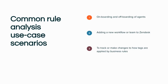So what are some of the common scenarios in which an admin might leverage rule analysis? One of the most common scenarios we see is in the onboarding or offboarding of agents. When a new agent joins the team or leaves the team — especially if that team member works in a specialized function or handles a select ticket type — it becomes extremely important to revise any business rules that affect this agent to ensure as little disruption as possible for your end users in getting their issues resolved.